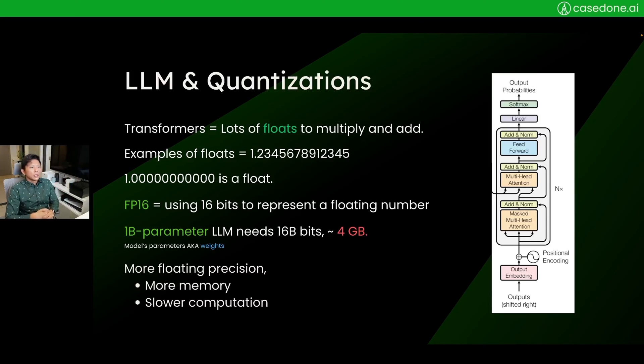Large language models are made of neural networks called transformers, and inside a transformer is a lot of numbers, usually floats. These floats need to undergo math operations, mostly multiplication and addition. This is time-consuming and energy-consuming as well. Floats are numbers with decimal points, an example is like 1.3345678910. The number one, if you represent it as 1.0000, is now a float rather than an integer.